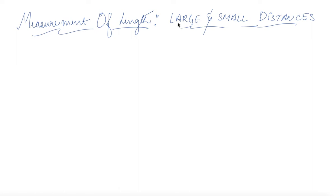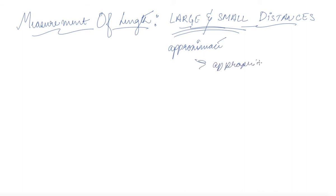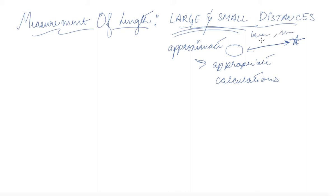Let's have a discussion about measurement of length — very large and small distances. Our way of defining distances changes, so we use approximations with appropriate calculations. For example, the distance between interstellar planets and stars is very huge, so measuring in kilometers or meters won't work. Similarly, for very small objects like intermolecular distances between two atoms, we need a different approach.